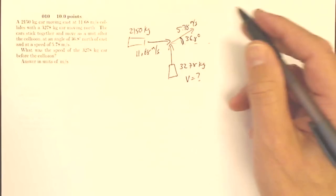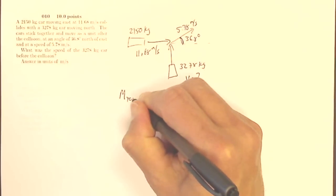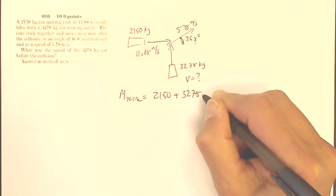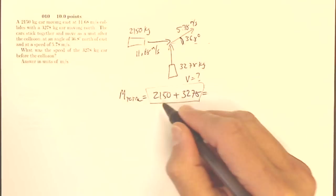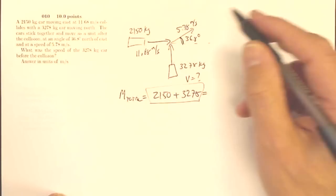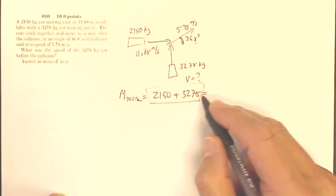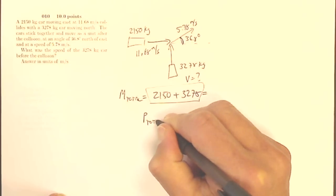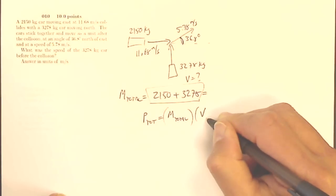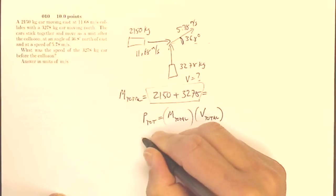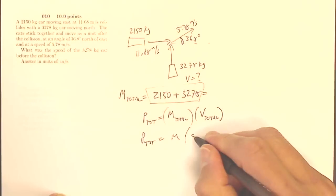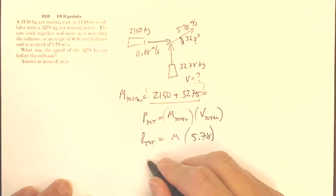So let's figure out this momentum. I have the total wreckage, so the total mass, the m total, is going to be my 2150 plus my 3278. And I know it's moving at 5.78 meters per second. My momentum total is going to be my total mass times my combined velocity of 5.78. So my P total is going to equal this mass times my velocity of 5.78, and that will give me my total momentum.